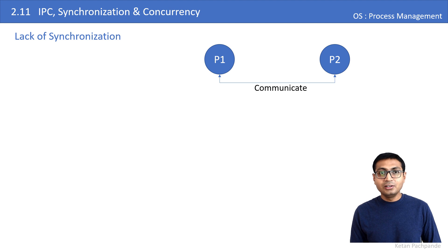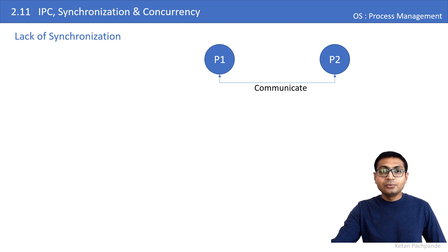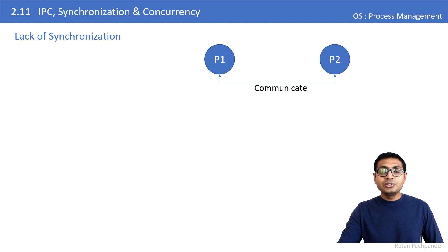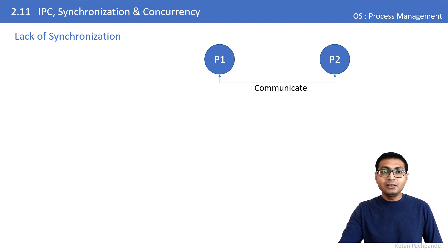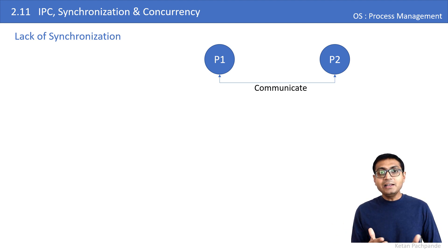When you go to a ticket window, many people come there but there is synchronization — they form a queue to get tickets one by one. The formation of a queue at the ticket window is the method of synchronization among multiple processes trying to access the same resource, which is the ticket window.